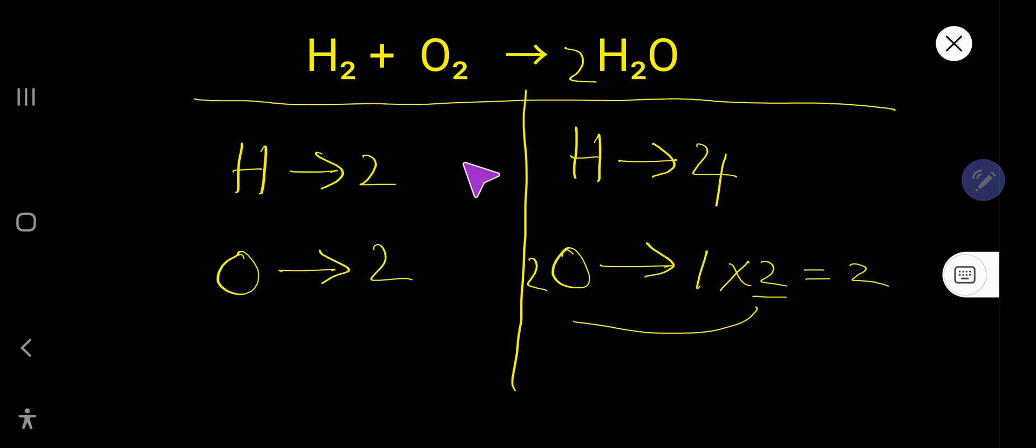Now you have to balance hydrogen because here 4, here 2. So you have to multiply here by 2, that gives you 4. If you multiply by something, that something must come before the atom. This hydrogen has come from here, so you have to place here 2.